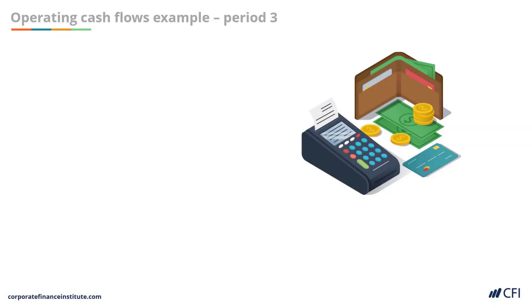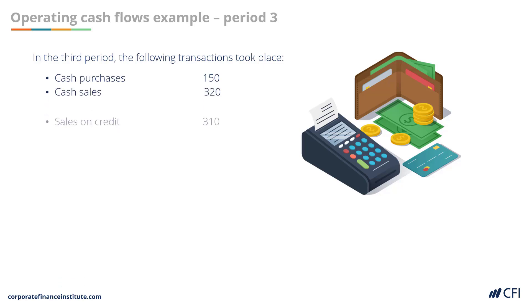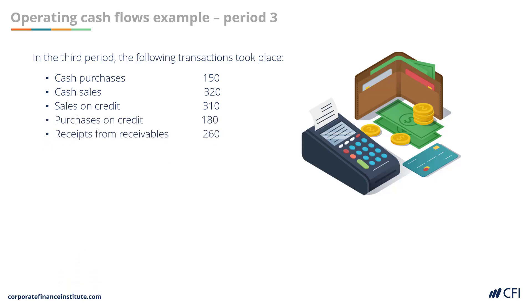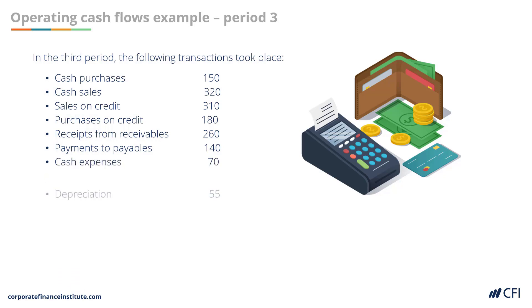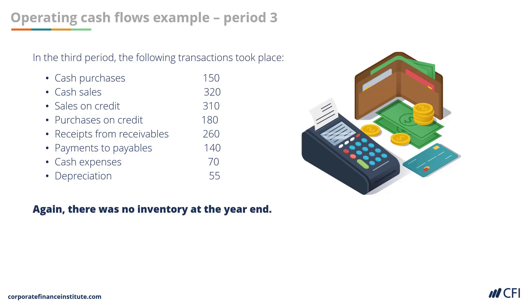Now let's look at an even more complicated period 3. The following transactions took place: cash purchases of $150,000, cash sales of $320,000, sales on credit of $310,000, purchases on credit of $180,000, receipts from receivables of $260,000, payments to payables of $140,000, cash expenses of $70,000, depreciation of $55,000, and again no inventory left at the end of the year. You can test yourself with the Excel exercise or watch as we demonstrate how to build the cash flow statement using both approaches.